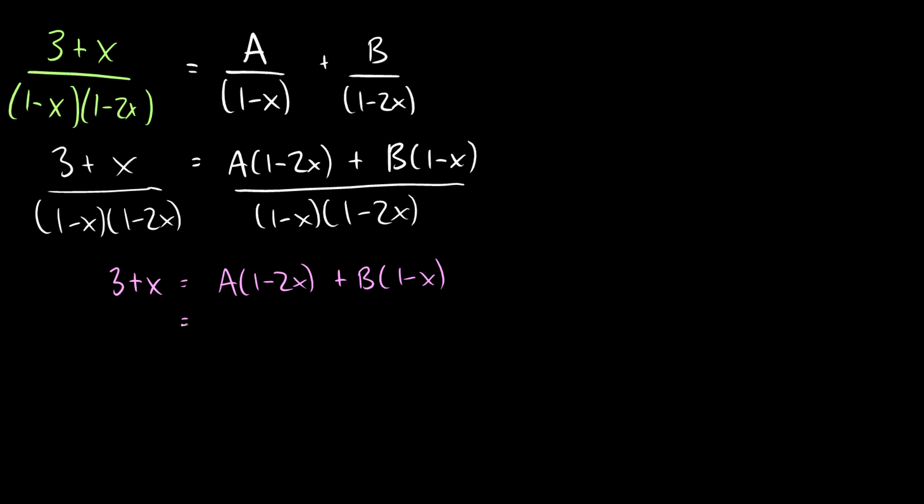So we have 3 plus x equals A times 1 minus 2x plus B times 1 minus x. We're going to expand the right side. So this is A minus 2Ax plus B minus Bx, and this equals 3 plus x. We're going to group all of our x's together. So we have A plus B, and then we have negative 2Ax and negative Bx. So we have 3 plus x equals A plus B plus negative 2A minus B times x.